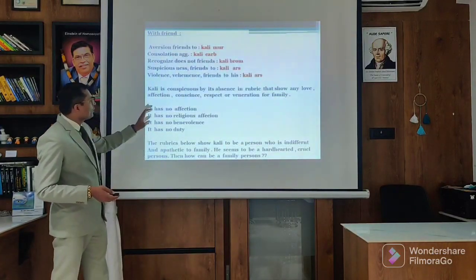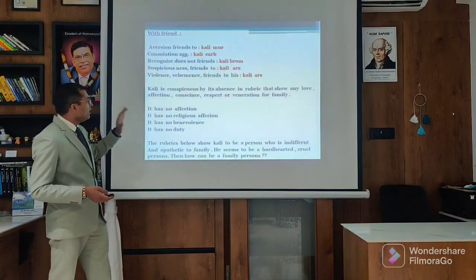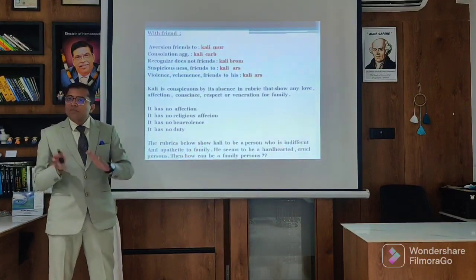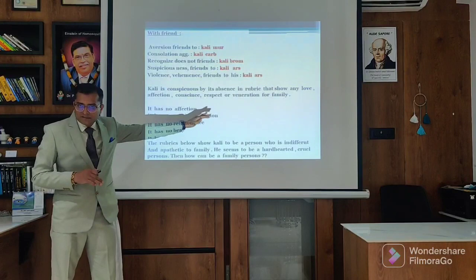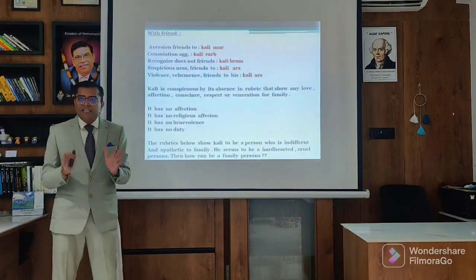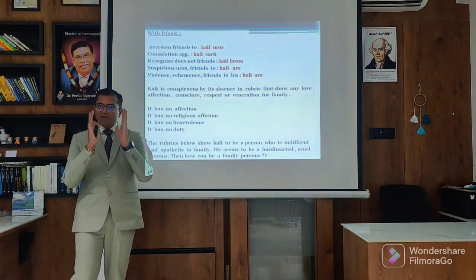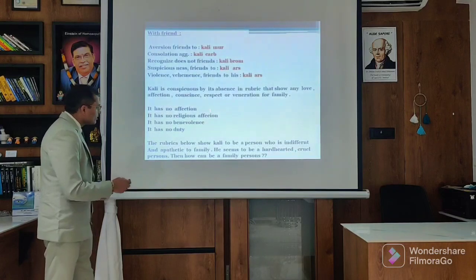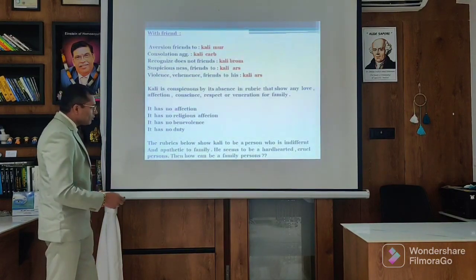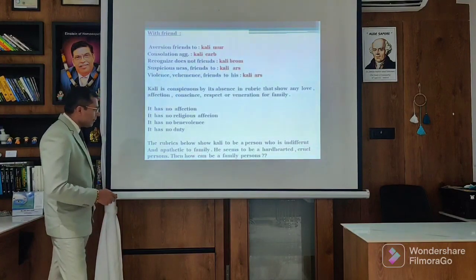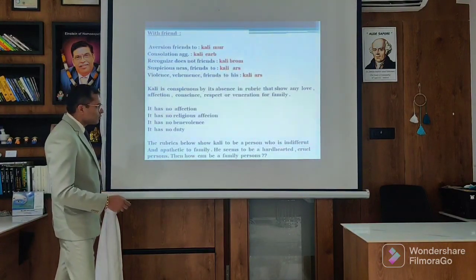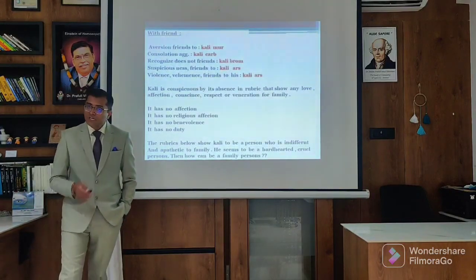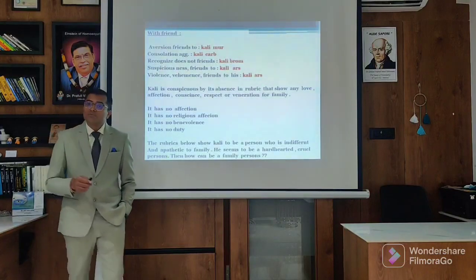Kali is conspicuous by its absence in the rubric that shows any love, affection, concern, respect or veneration for the family. From the repertory point of view, there is a lack of everything - it is not about love, it is just what they want: security. There is no affection, no veneration, no duty. The rubric shows Kali to be a person who is very indifferent, apathetic to the family, hard-hearted and cruel. How then can we call it a family person? Kali never really is a family person.